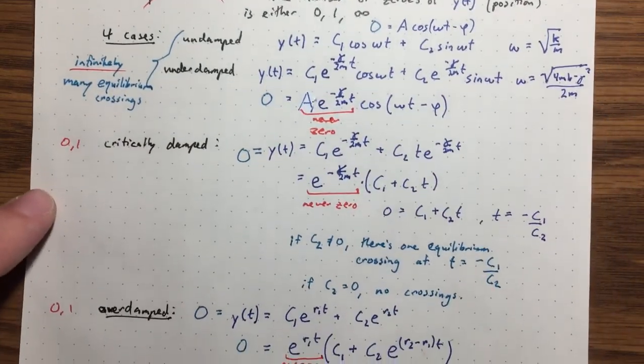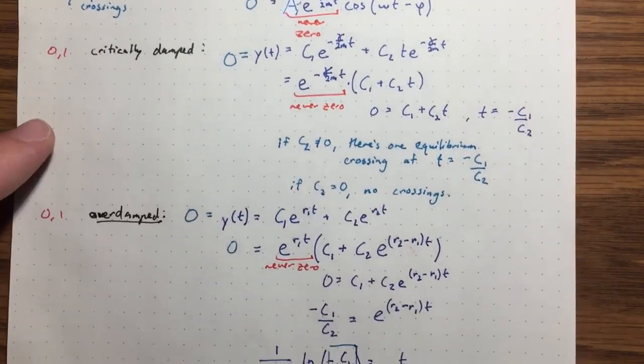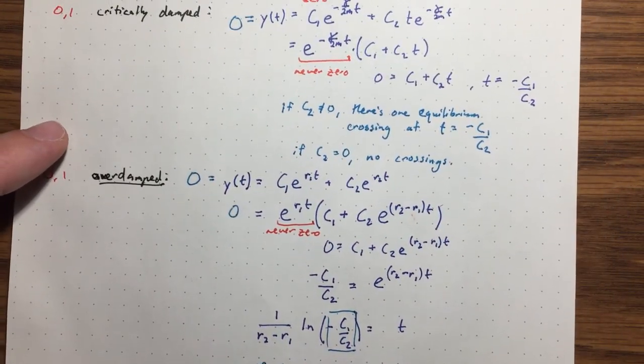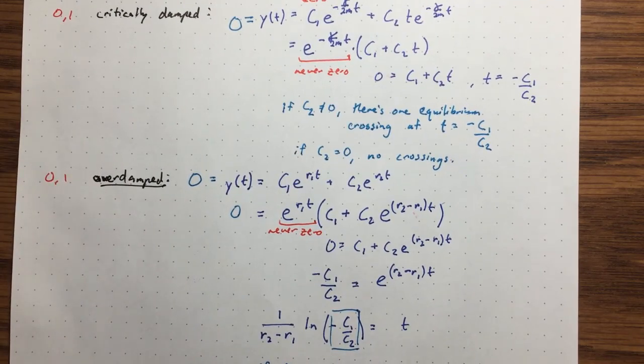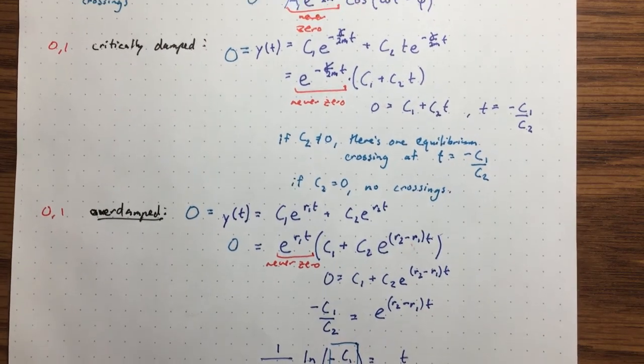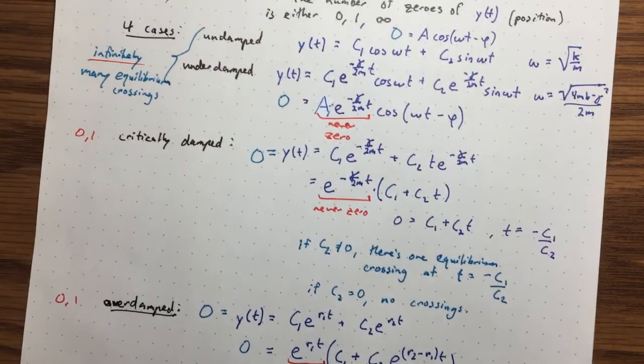In summary, we've now covered all four cases. Undamped and underdamped both produce infinitely many equilibrium crossings. Critically damped and overdamped produce at most one crossing — either zero or one. Therefore, the only possibilities for the number of times a mass-spring-dashpot system crosses the equilibrium position are zero, one, or infinitely many. It cannot cross exactly twice. This was a good review of all the different forms of the solutions.